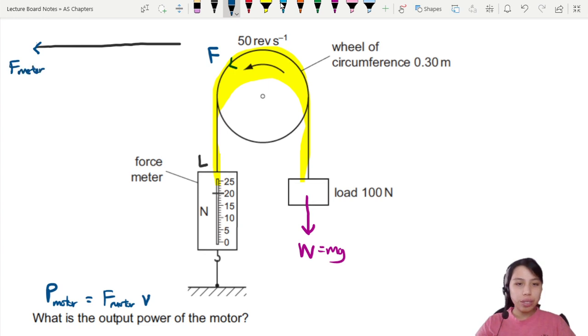This force is 20 newtons in that direction. On the other end, the load is pulling down the string on this side in the opposite direction—another force here, 100 newtons.